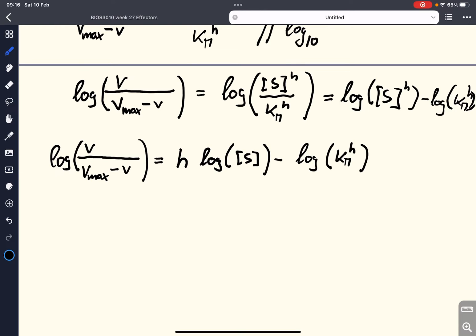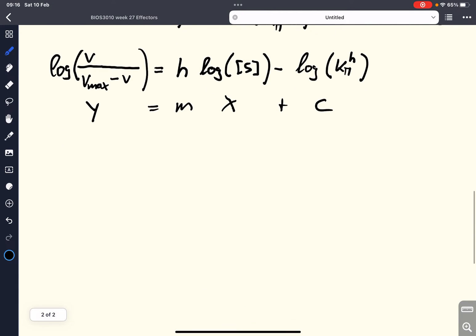And now we have, believe it or not, a straight line, or the equation for a straight line. So, this would be Y equals MX plus C. And we can think about constructing what is known as the Hill plot.